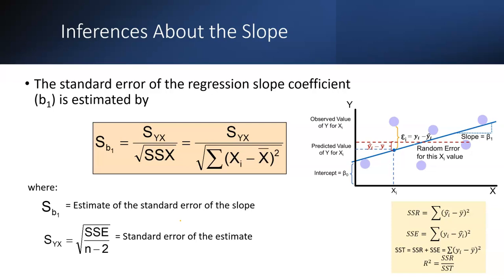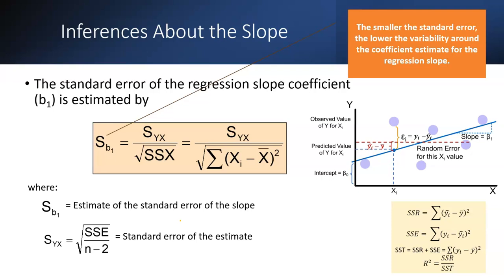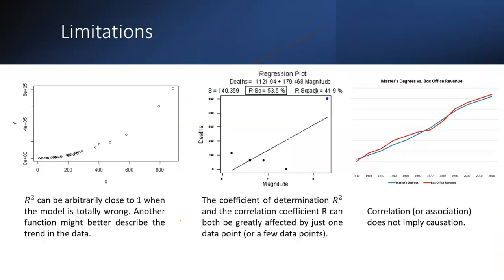The standard error for the regression slope coefficient is represented by another formula, from which we can find the value of Sb1. A smaller standard error means lower variability around the coefficient estimate for the regression slope, which indicates we are not seeing excessive variability in our regression estimate.